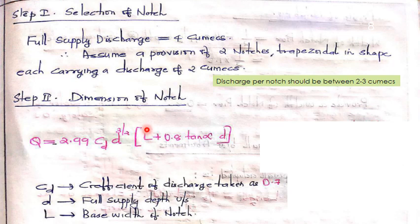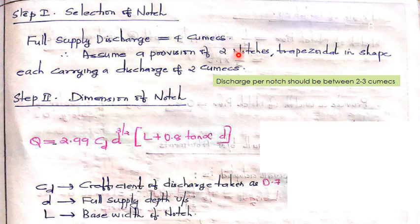Step 1 is the selection of notch. The full supply discharge is 4 cumecs, so we assume provision of two trapezoidal notches, each carrying a discharge of 2 cumecs. This is based on the condition that discharge per notch should be between 2 to 3 cumecs. For example, if the full supply discharge is 6 cumecs, we would provide three notches so that the discharge per notch is 2 cumecs.